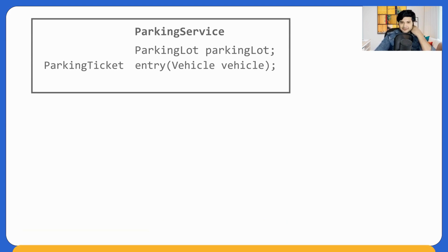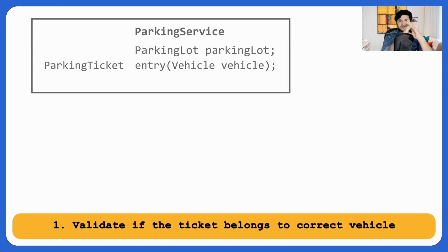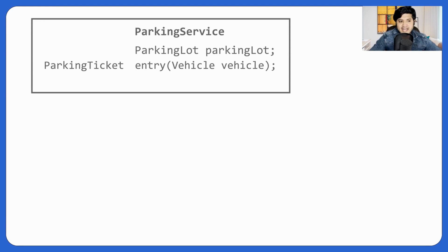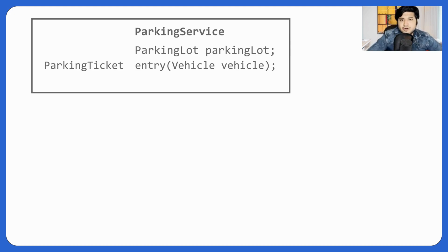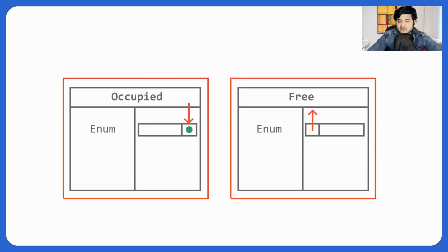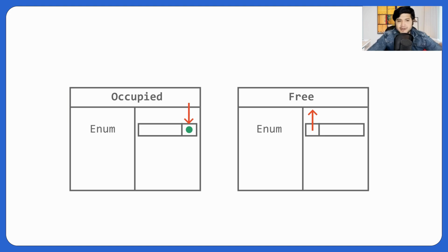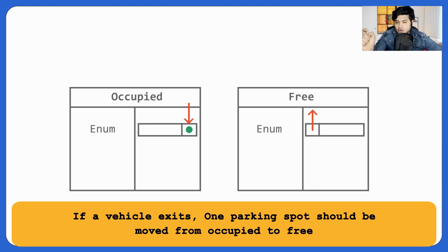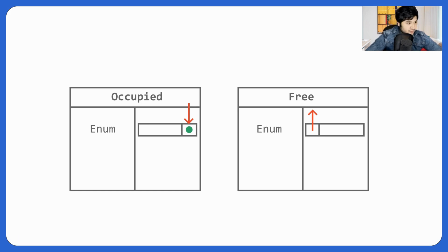Now for exit, two things happen. First, we validate whether this ticket belongs to the correct vehicle — which can be validated because the parking ticket already has an instance of the vehicle. Second, one parking spot needs to be moved from the occupied map to the free map.